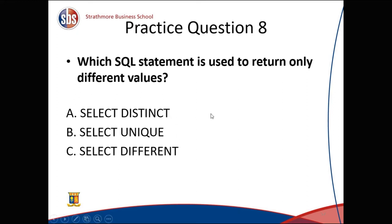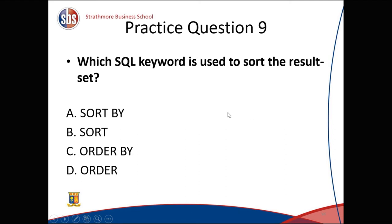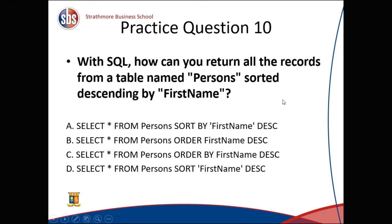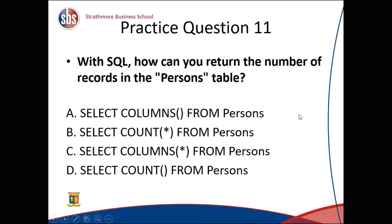Which SQL statement is used to return only different values? Letter A — SELECT DISTINCT. Which SQL keyword is used to sort the result set? Letter C — ORDER BY. How do you return all records from a table ordered by first_name descending? Letter C: SELECT * FROM Persons ORDER BY first_name DESC. How do you return the number of records in the Persons table? Letter B: SELECT COUNT(*) FROM Persons.